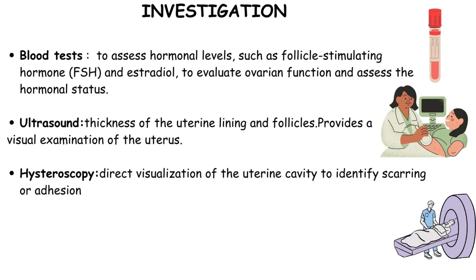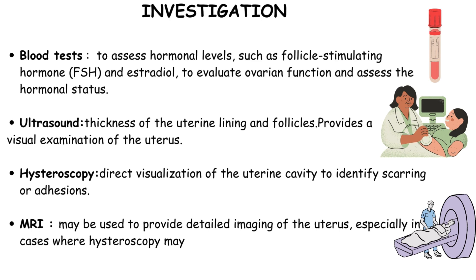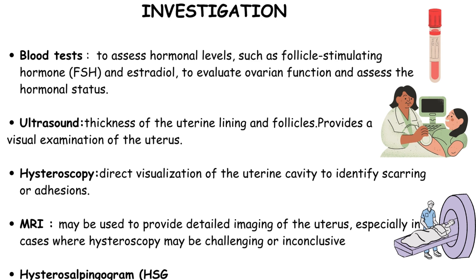In cases where hysteroscopy results are inconclusive or challenging, MRI may be employed to provide detailed imaging of the uterus. Additionally, a hysterosalpingogram (HSG) is utilized to assess the condition of the uterus and fallopian tubes.